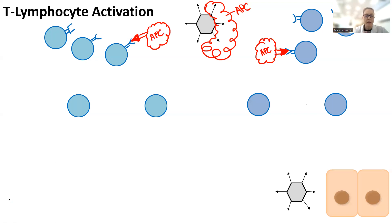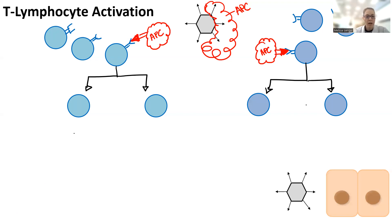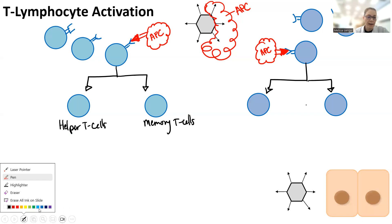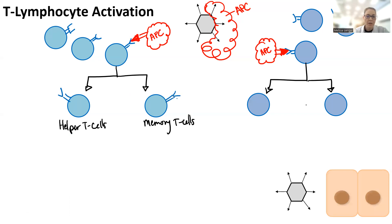As soon as the antigen presenting cell is presented to the T cell, it's going to start to go through proliferation and differentiation. Mostly what that means is you divide the cells and specialize them. This T cell is going to divide and become memory T cells and also helper T cells. On their surface they have the same receptor that recognizes that antigen — that's the whole point of proliferating and differentiating these cells.